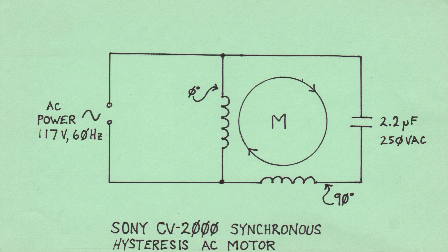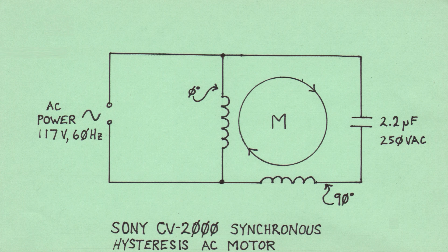The value of the capacitor was chosen so that in combination with the inductance and resistance of the windings it creates a quadrature relationship. The reason for this is simple: if you plot two sine waves in quadrature, you get a circle — more precisely, in the case of a motor, you get a rotating magnetic field. The armature of the motor is literally dragged around in that field.